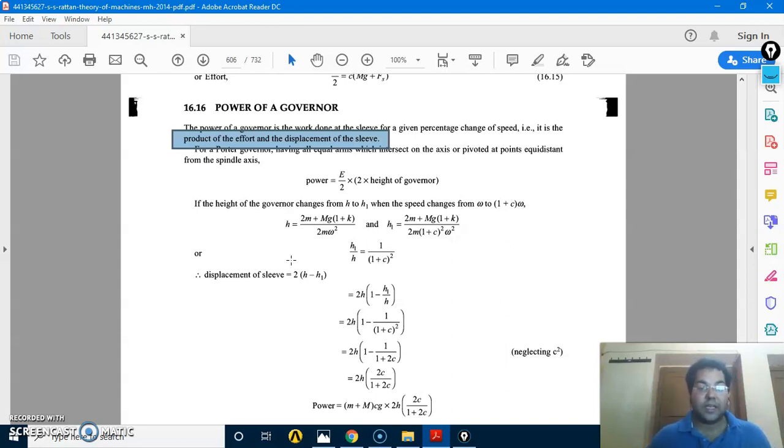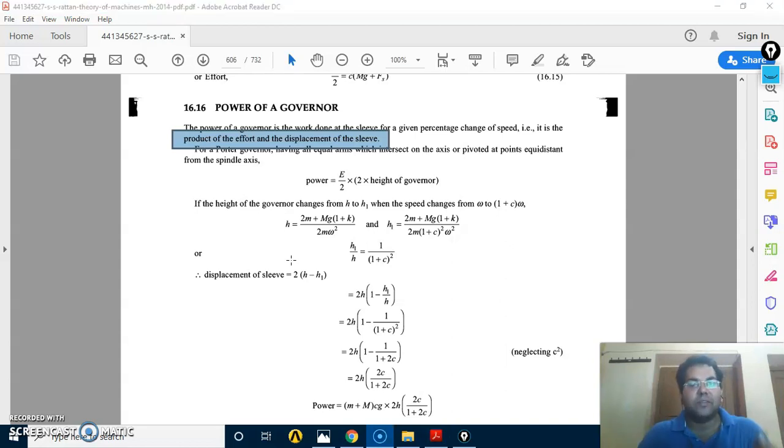Effort I have already told you, what is the effort? Effort means force. The governor starts at one equilibrium speed, for example, governor runs at 200 rpm. So an equilibrium speed means it is 200 rpm, which would be the lower position. This is the equilibrium speed.